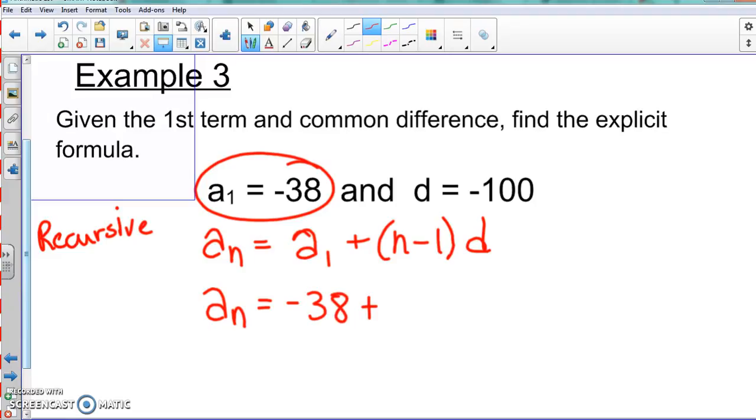And since we don't know what aₙ is, we don't even really know what n is—we're not really given a specific term that we're trying to find. Then our common difference is -100.